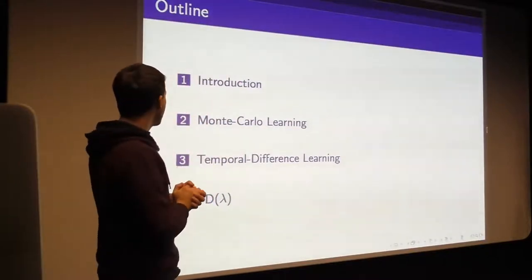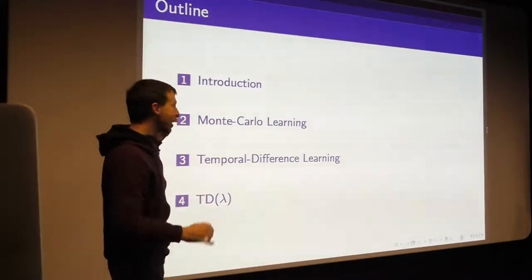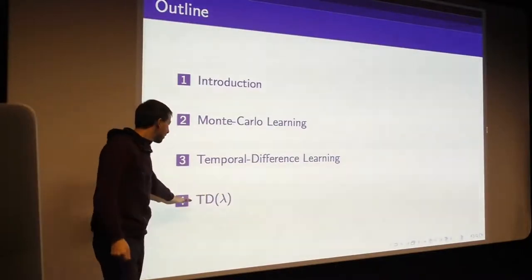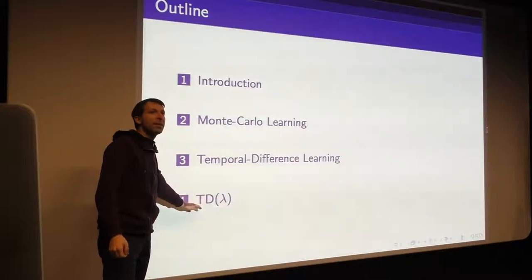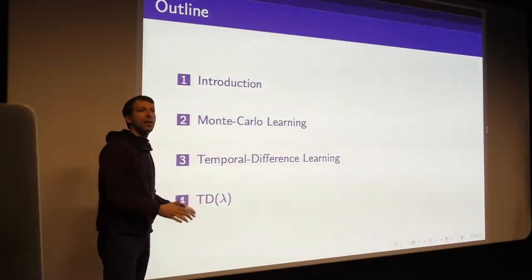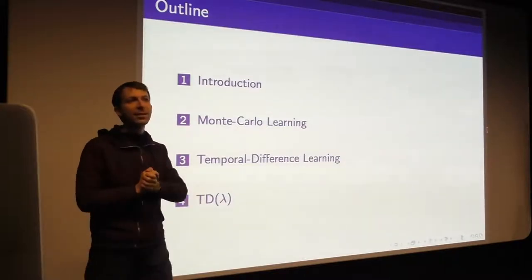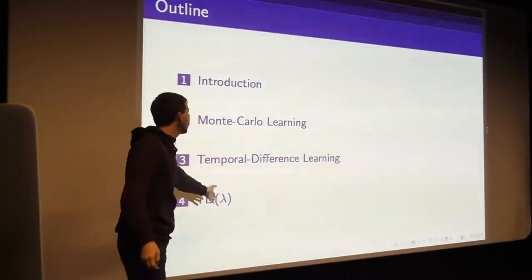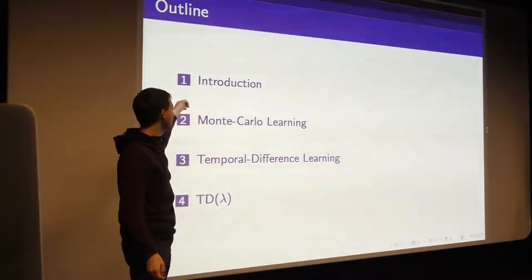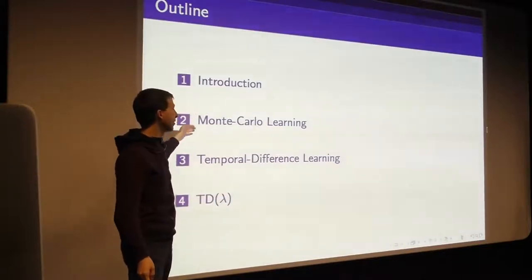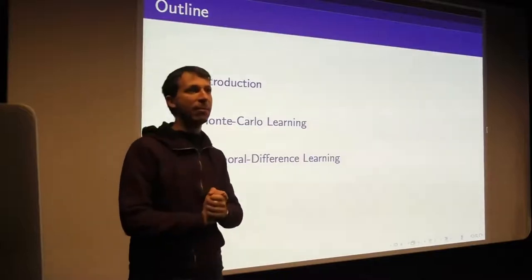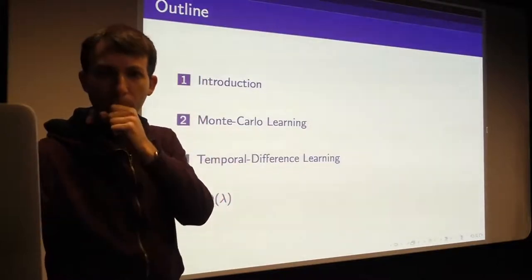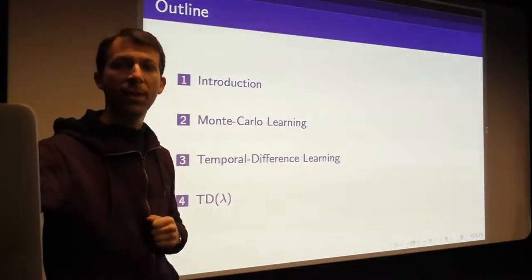Towards the end of the class we'll see that we can unify these approaches. There's a whole spectrum of methods known as TD Lambda where we can go any number of steps along the trajectory to come up with a viable estimate of the value function. Some formal proofs of the equivalence between Monte Carlo and TD learning are deferred to an appendix you can look at in your own time.